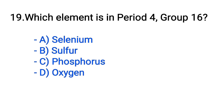Question number 19. Which element is in period 4? Option A: Selenium. B: Sulphur. C: Phosphorus. D: Oxygen. The correct answer is option A, Selenium.